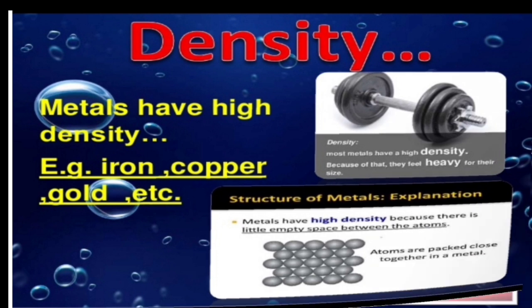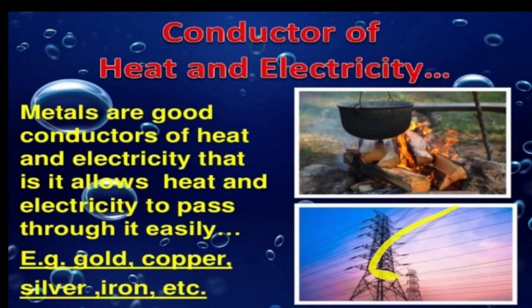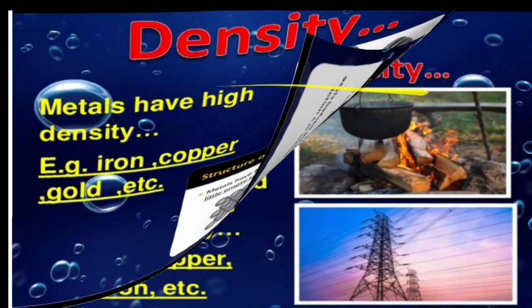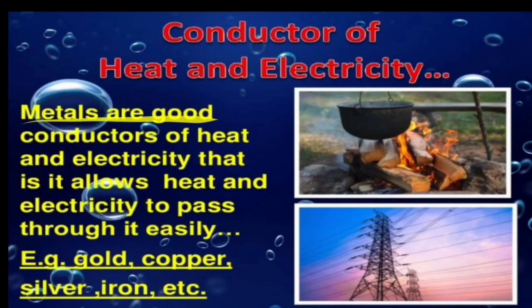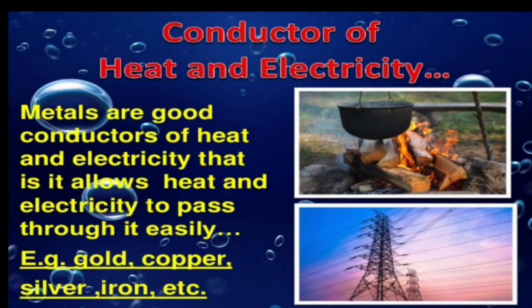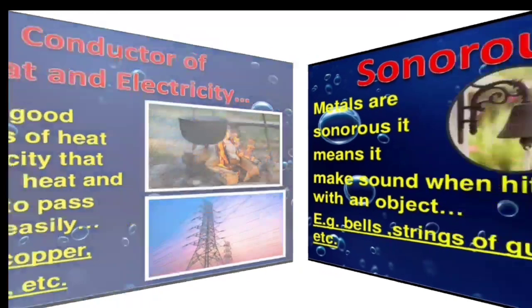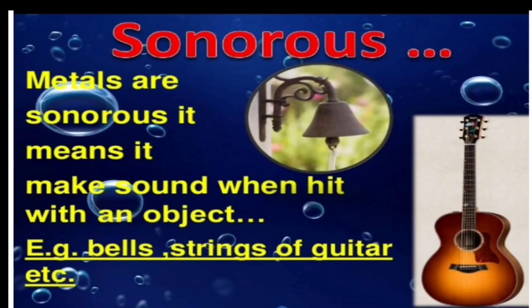Metals are good conductors of electricity and also good conductors of heat. They allow heat and electricity to pass through them easily. Examples: gold, copper, silver, iron, etc. — all show good heat and electricity conducting properties.